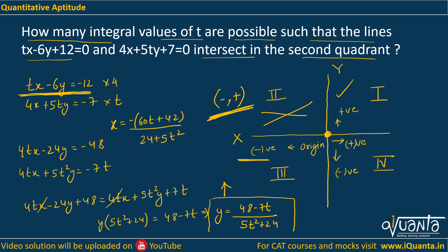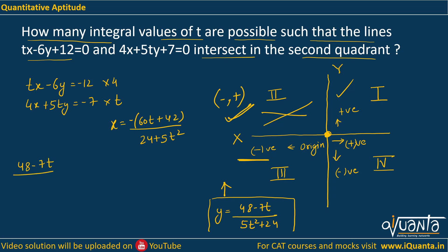Now we have to deal with their signs because they were intersecting in the second quadrant. We know that y has to be positive, meaning y should be greater than 0. So (48-7t)/(5t²+24) should be greater than 0, which means 48-7t should be greater than 0, so t must be less than 48/7.